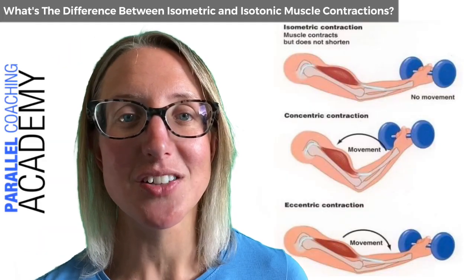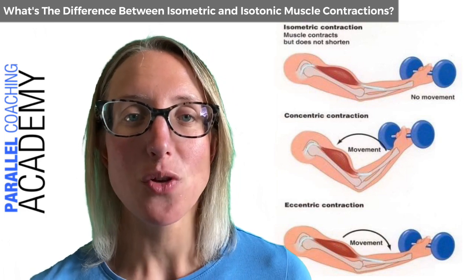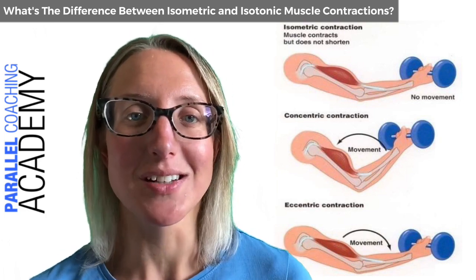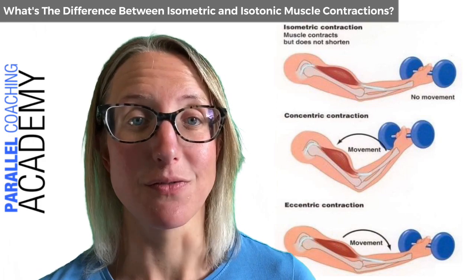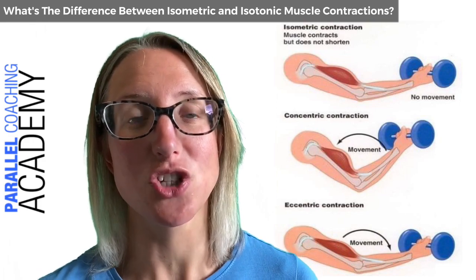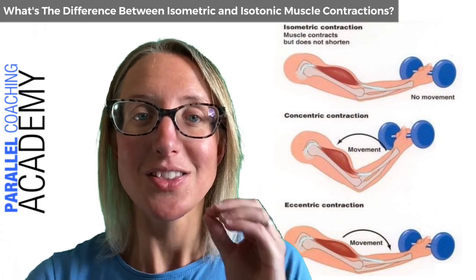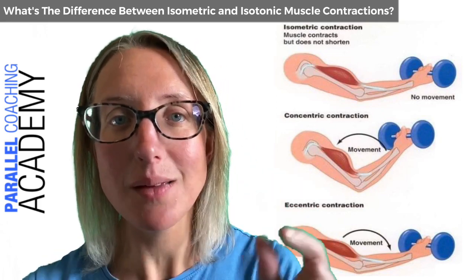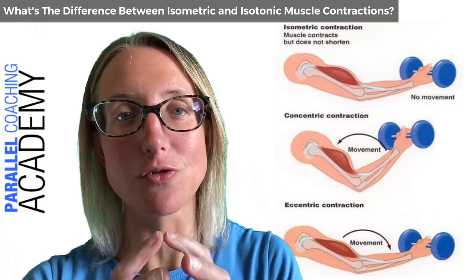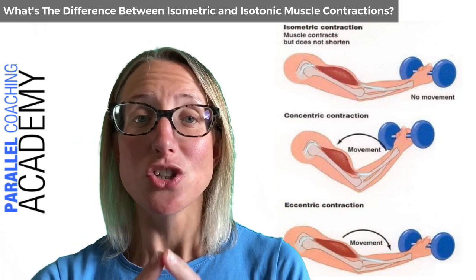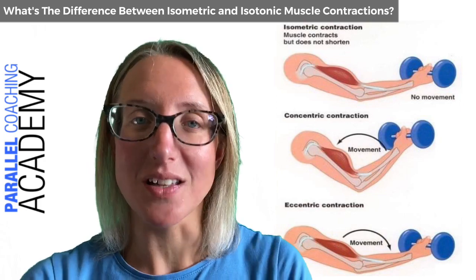Let's get started on understanding what a muscle contraction is. If you learn about the sliding filament theory as part of your level two and level three anatomy and physiology knowledge, you need to understand that when a contraction takes place, the tiny myofilaments — your actin and your myosin — move over each other.